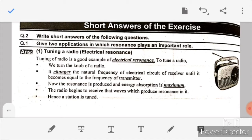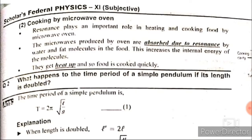The second application is cooking of food. Resonance plays an important role in heating and cooking of food by microwave oven. The microwaves produced by the oven are absorbed due to resonance by water and fat molecules in food. This increases the internal energy of the molecules; they heat up and the food is cooked quickly.